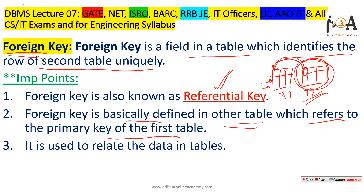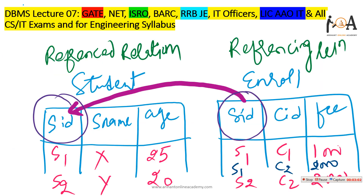The foreign key is defined in the second table, which refers to the primary key of the first table. The primary key is the minimal key that uniquely identifies each and every row. Foreign key is used to relate the data between tables — to relate data among multiple tables, we must use the concept of foreign key.